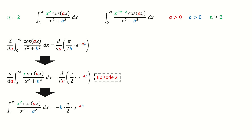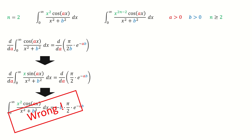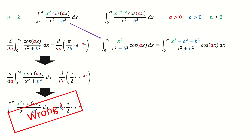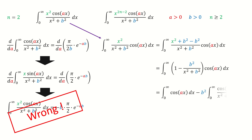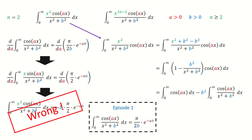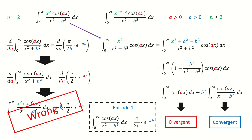It seems very easy, but this answer is wrong. Let's see why. First, we write the integral function by putting the cosine term to the right. And then we add b² and subtract b² on the numerator, so we can write this fraction into this form. Then we split it into two integrals. Recording the result from episode 1, the second integral is convergent, but the first integral is divergent — so the original integral is divergent for n equals 2.